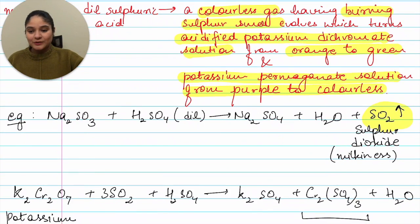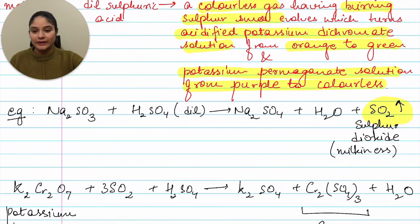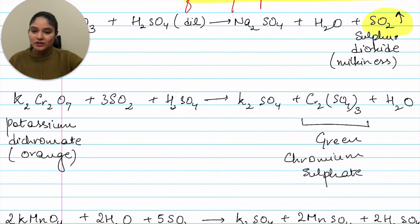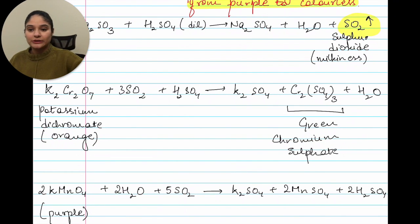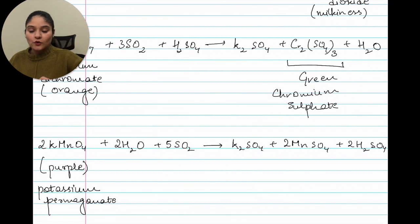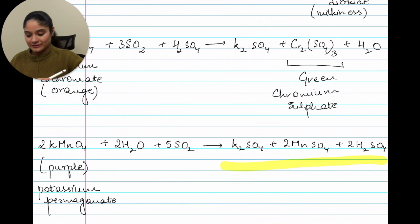For an example: Na₂SO₃ reacting with dilute sulfuric acid gives Na₂SO₄ plus water plus SO₂. The next two equations are not so important but are included for students preparing for national-level olympiads. Potassium dichromate K₂Cr₂O₇ reacting with SO₂ and H₂SO₄ gives K₂SO₄ plus chromium sulfate, which is green in color. Potassium permanganate KMnO₄ plus water plus SO₂ gives K₂SO₄ plus MnSO₄ plus H₂SO₄ — it goes from purple to colorless.